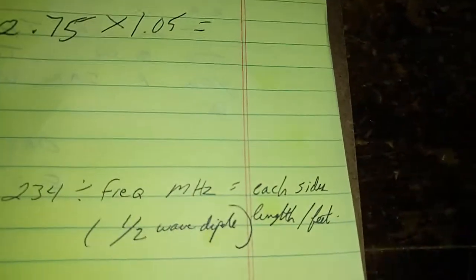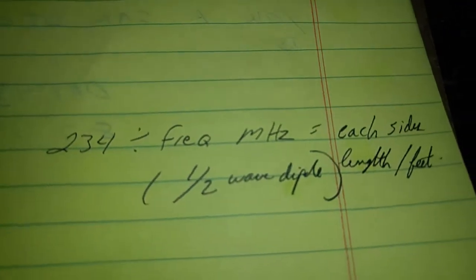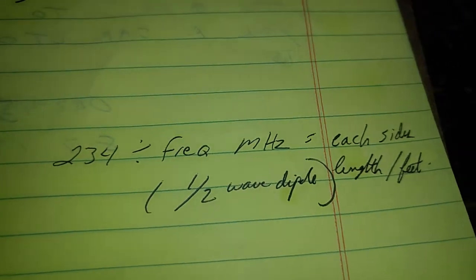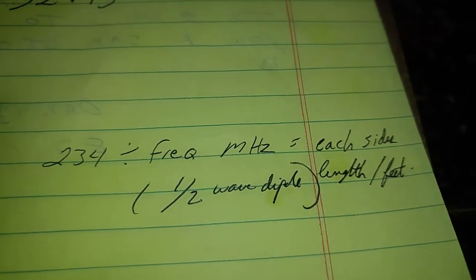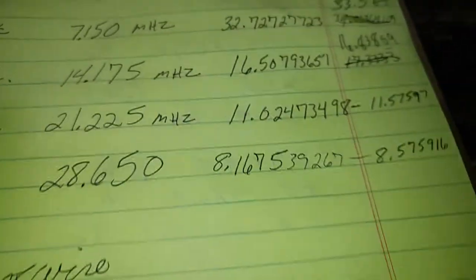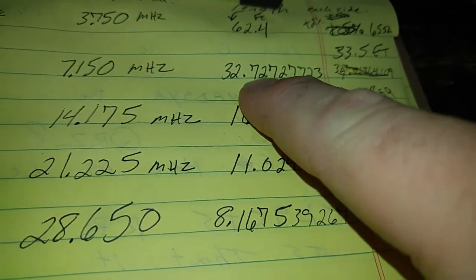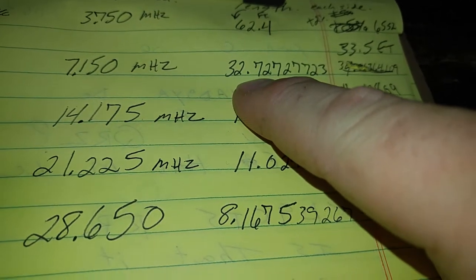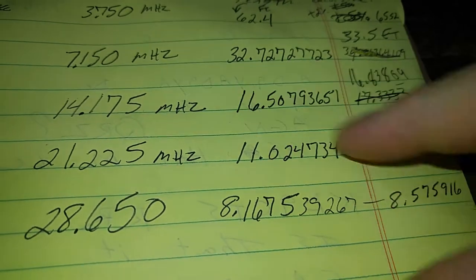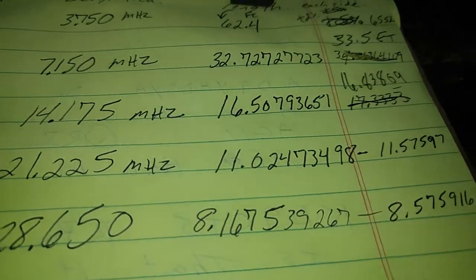And in order to do that, I'm going to take the magic number 234, divide it by the frequency in megahertz. That's very important. Megahertz, not kilohertz. And it's going to give me the length of each side of the dipole. So 32, and basically 32 and three quarters of a foot.